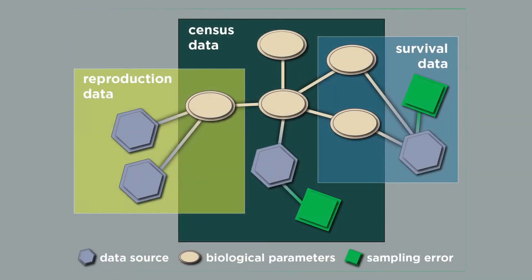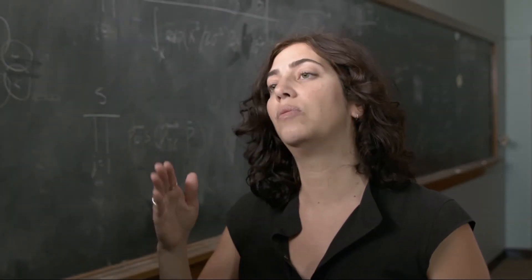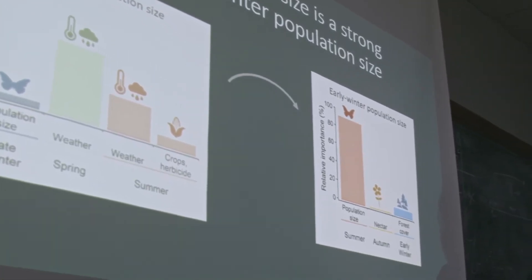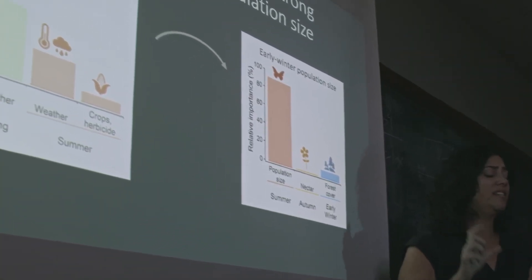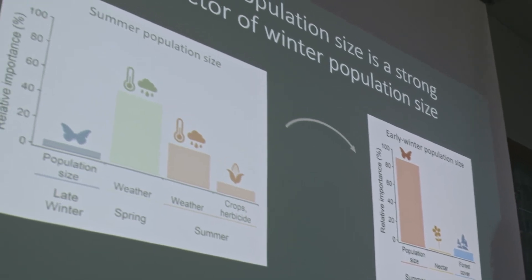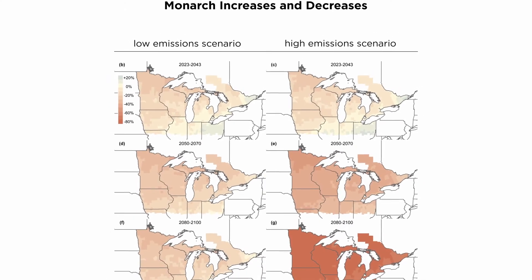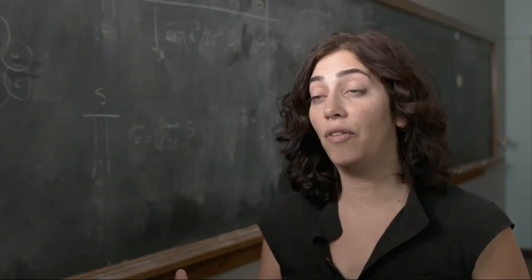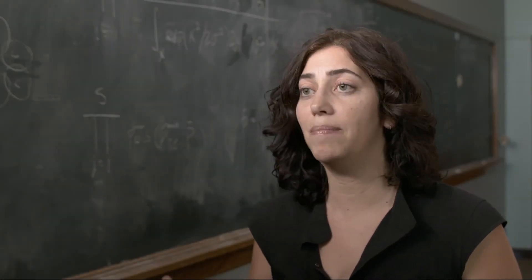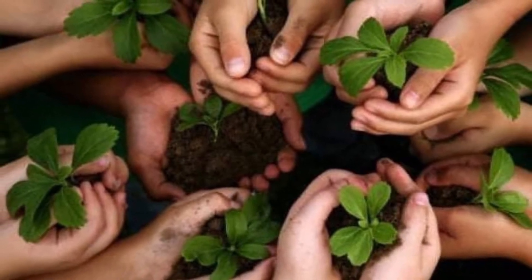What we did is we used our data integration models to combine thousands and thousands of surveys along those migratory routes to look precisely at what is the relative contribution of each of those stressors to monarch declines. What we found is that breeding season weather was more than seven times more important in the ultimate size of the monarch population. Now we're projecting out into the future what the climate might look like and what that might mean for monarchs. This data integration approach is really helpful for understanding not just what's going on with the monarch population but also how best and where to target conservation actions.